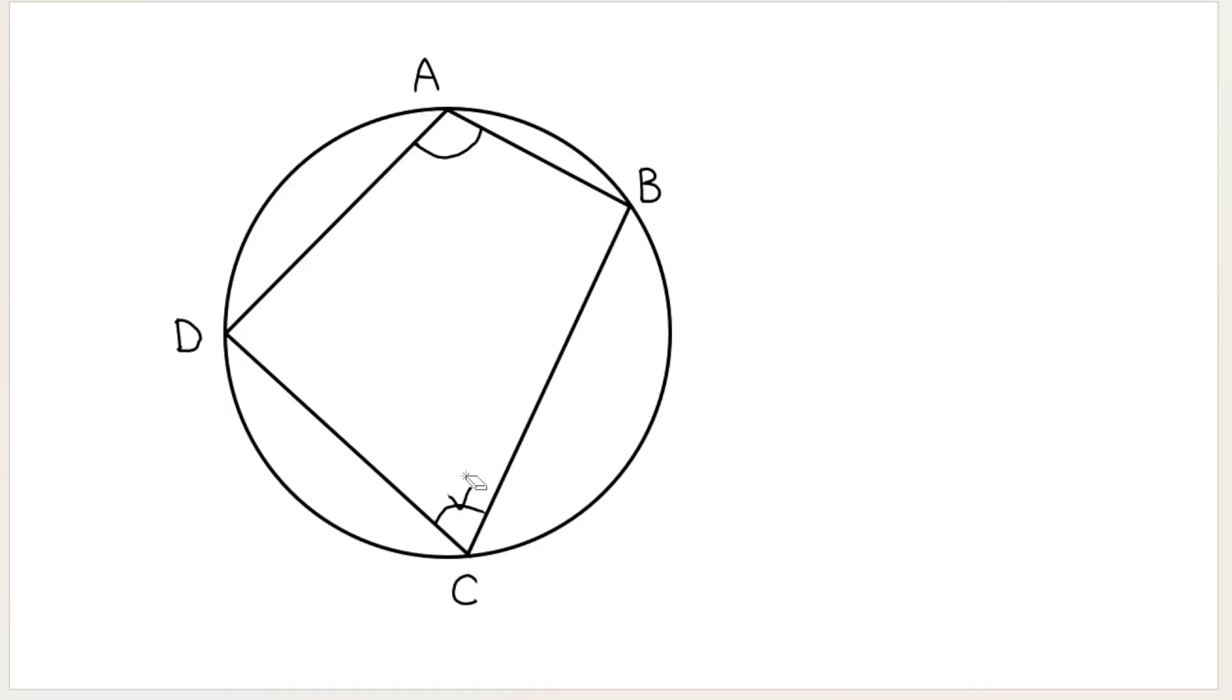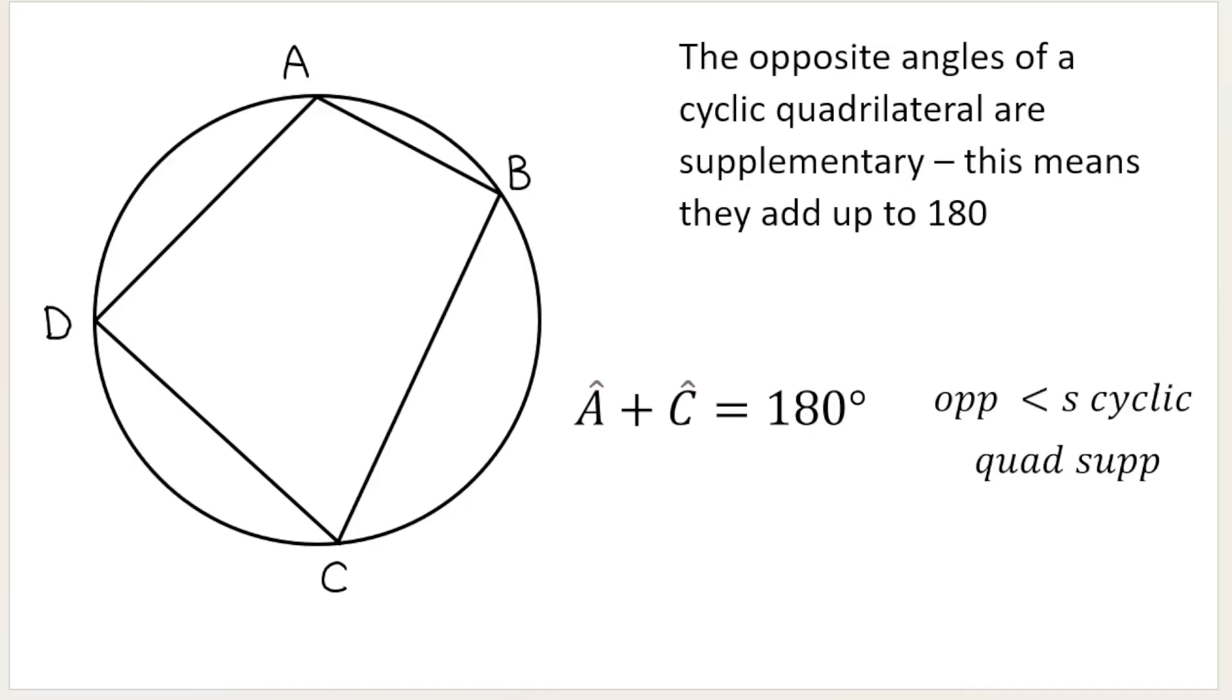And then we have angle D and angle B. Those are opposite angles. You can see that they exist opposite one another. And what's interesting about a cyclic quad is if you construct a proper cyclic quad, you will note that the opposite angles always add up to 180 degrees. We say that their opposite angles are supplementary.